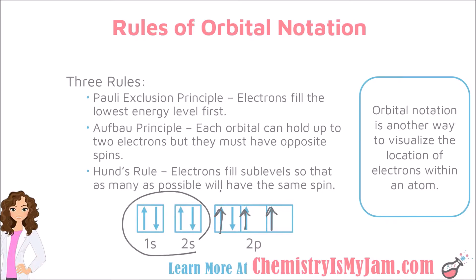If you had written up-down in one orbital, then up-down in the next orbital, you would still have the correct number of electrons, but you would have violated Hund's Rule. This is an incorrect way to do the orbital notation for oxygen. You should have as many up arrows in place before you put any down arrows, in order to avoid violating Hund's Rule.